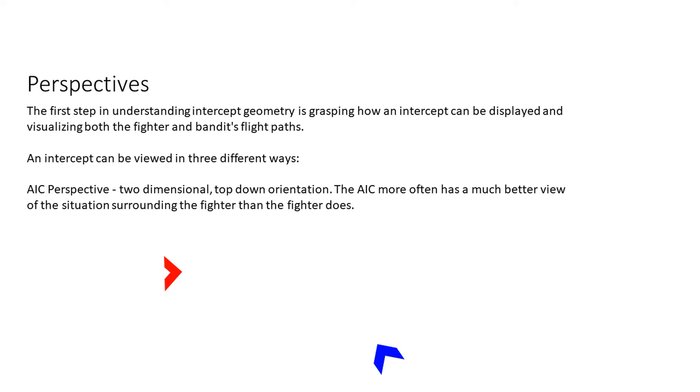The first way is the AIC perspective. So that's the controller, the AWACS. And that's a two-dimensional top-down orientation. The AIC often has a much better view of the situation surrounding the fighter than the fighter does itself. Their job is to maintain situational awareness.